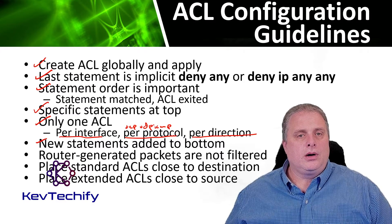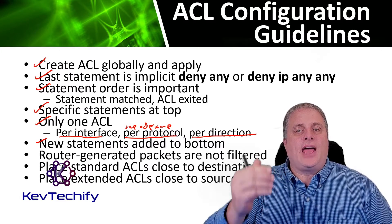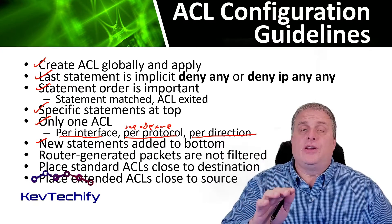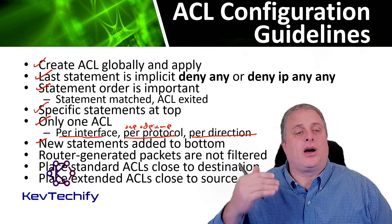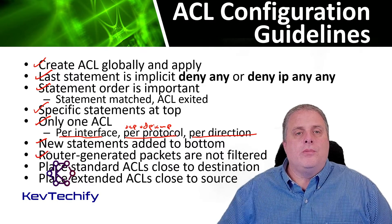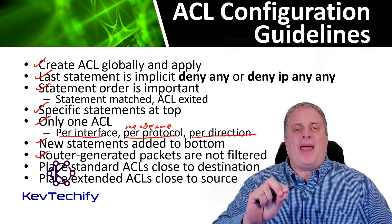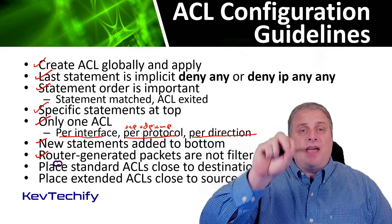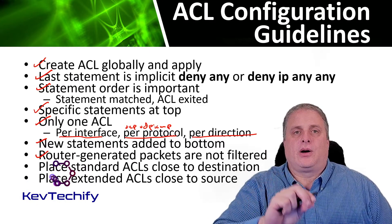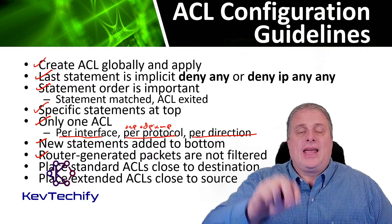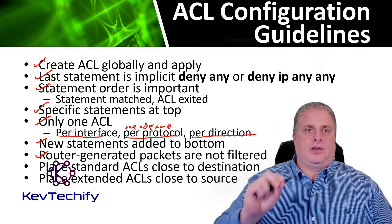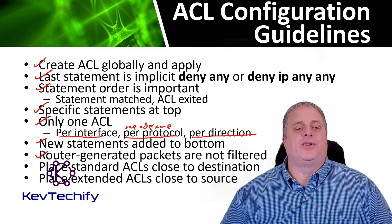Remember that new statements for an existing ACL are added at the bottom of that access control list by default — a new access control entry goes to the bottom. Also remember that router-generated packets are not filtered by ACLs. So if that router generates traffic, such as a routing update or routing protocol traffic, it is not affected by outbound filters. Router-generated traffic is not filtered.